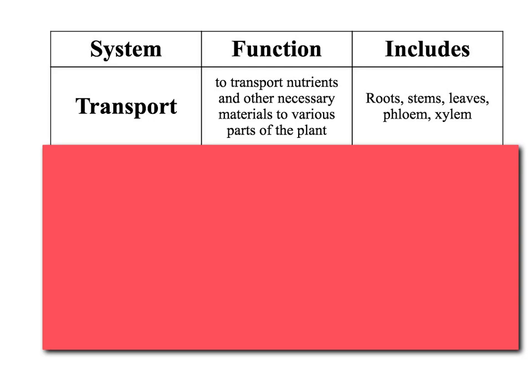The first system we're going to look at is the transport system. The function of this system is to transport nutrients and other necessary materials to various parts of the plant — it's the transporting vehicle for the plant; it moves things. It includes the roots, stems, leaves, phloem, and xylem. The nutrients and necessary materials we're talking about include water, carbon dioxide, glucose, and even oxygen — and remember, for plants, oxygen is a waste product. So the transport system is moving things from one place in the plant to another.